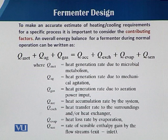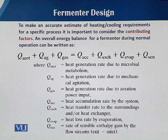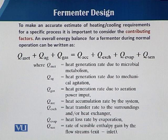These three factors — Q_met, Q_Ag, and Q_gas — add heat into the system. On the other hand, Q_accumulation is heat accumulated by the system, and Q_exchange is the net difference between heat addition and subtraction. Q_evaporation represents heat loss due to evaporation, and Q_SEN is the rate of sensible enthalpy gain by the flow stream — when there is a flow, it absorbs some heat energy.